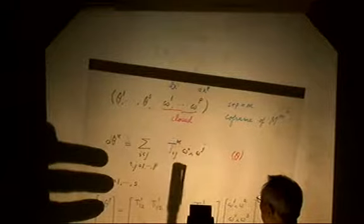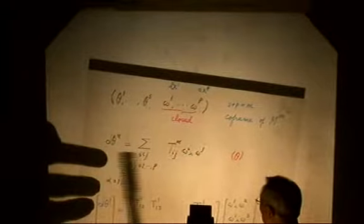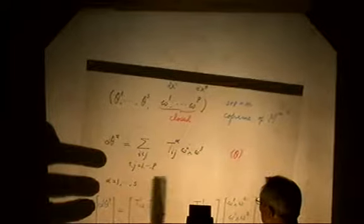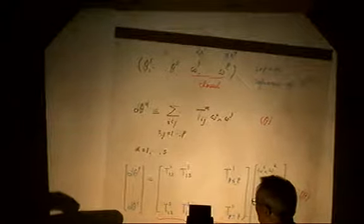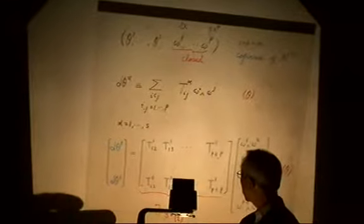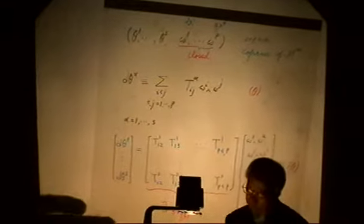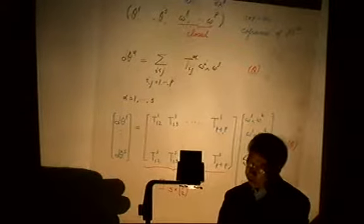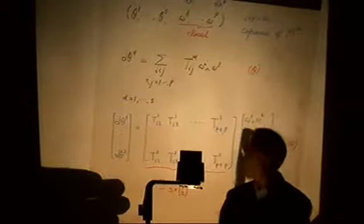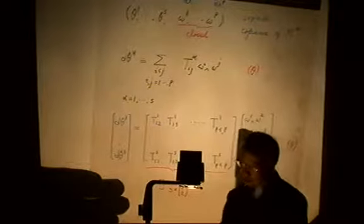So d-zeta expressed in terms of omega gives certain coefficients. Expressing this in matrix form, here is the matrix of coefficients. We call this matrix the torsion. The torsion is an s by p-choose-2 size matrix. We rearrange these omega two-forms in lexicographic order.